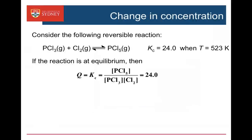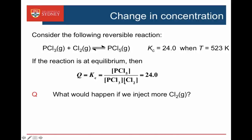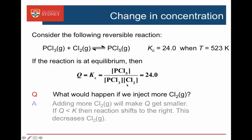Let's look at a reaction that's at equilibrium: the reaction of PCl3 and Cl2 to make PCl5. If we're at equilibrium, the value of the reaction quotient Q is equal to K, which in this case is 24. So what would happen if we introduced more Cl2? Well, if we add more Cl2, Q will get smaller because Cl2 is on the bottom. So if Q is less than K, the reaction will shift to try to make Q equal to K, and so it will shift to the right.